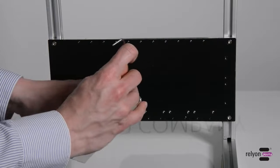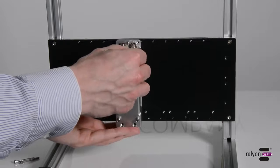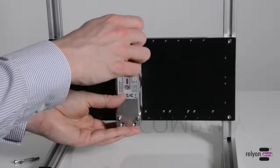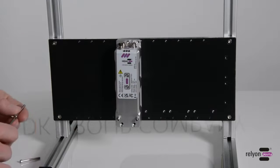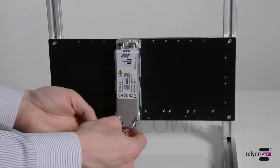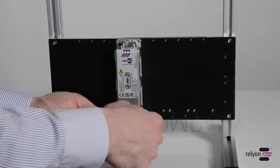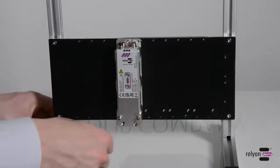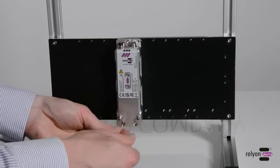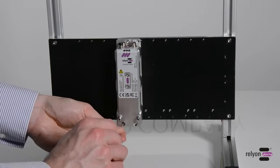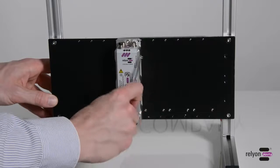To mount the module, start with the top screw. However, do not fully tighten the screw yet. This makes it easier to fasten the two lower screws. Once you have fastened all three screws, you can tighten them firmly.